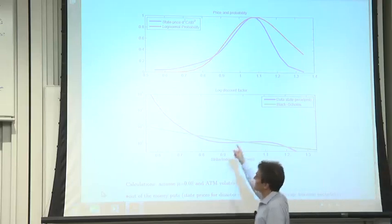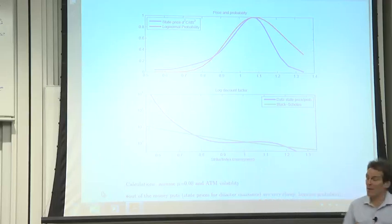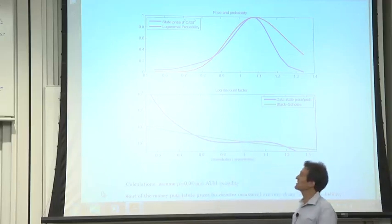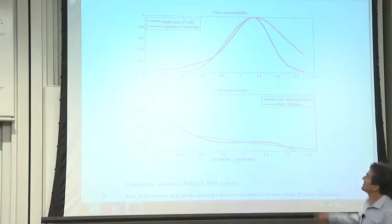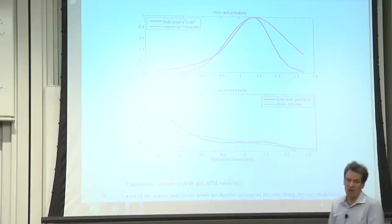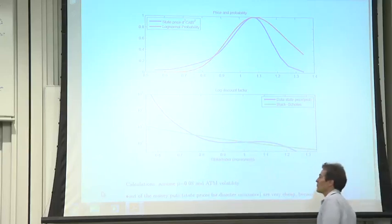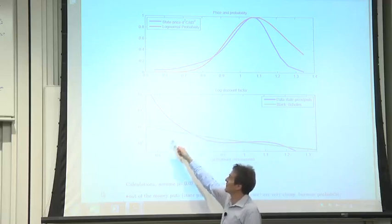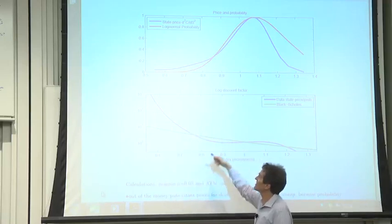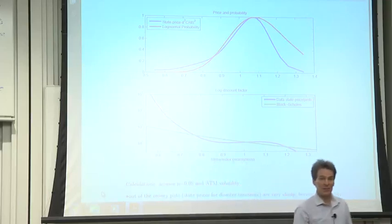So here I translated it to a discount factor. A discount factor is just state price divided by probability. If you buy the log-normal probability distribution implicit in the Black-Scholes formula, the probability is so close to zero that even though the out-of-the-money puts are only two bucks, they should be two cents. So the ratio of state price to probability, the implied discount factor, the implied marginal utility in these extreme events is enormous. This is on a log scale, so that's a factor of a thousand bigger than it should be.